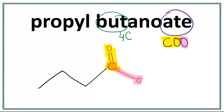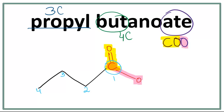Let's number the carbons. The carbon in the functional group is always the first carbon, then the second carbon, the third carbon, and the fourth carbon. Now let's work on the side chain, which is propyl, meaning that we have three carbons in the side chain.